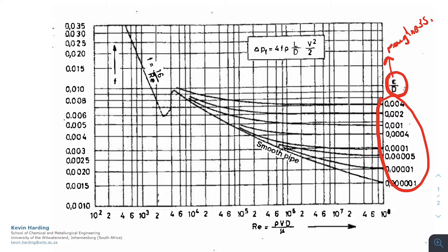From your given e over d and your Reynolds number, you can now figure out which line you need to be working with, which Reynolds number you need to be working with, and where the two intersect, you can then read off your f value on the left.